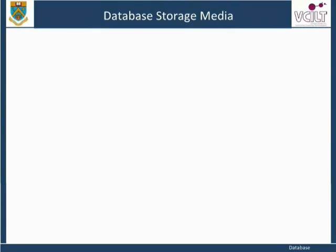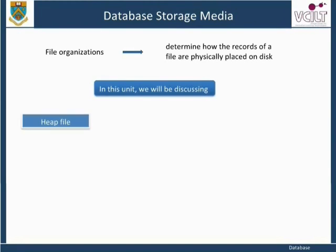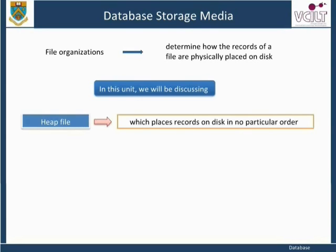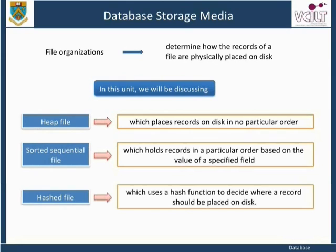There are a number of commonly used file organizations which determine how the records of a file are physically placed on disk. In this unit, we will be discussing: heap file, which places records on disk in no particular order; sorted sequential file, which holds records in a particular order based on the value of a specified field; and hash file, which uses a hash function to decide where a record should be placed on disk.